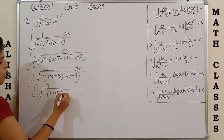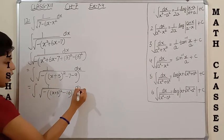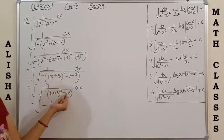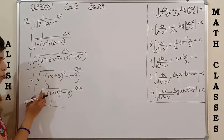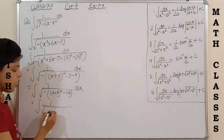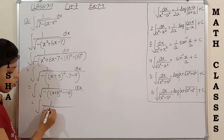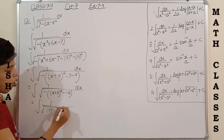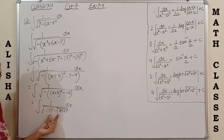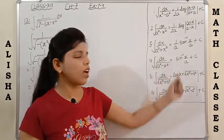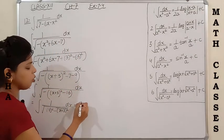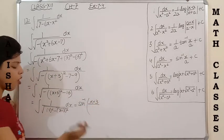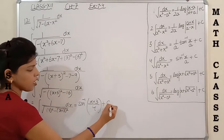So the expression becomes √(-(  (x+3)² - 16)). Taking the minus sign inside: this becomes √(16 - (x+3)²) = √(4² - (x+3)²). This matches formula 4: 1/√(a² - x²) = sin⁻¹(x/a) + C. Applying it with x replaced by (x+3) and a = 4, the answer is sin⁻¹((x+3)/4) + C.